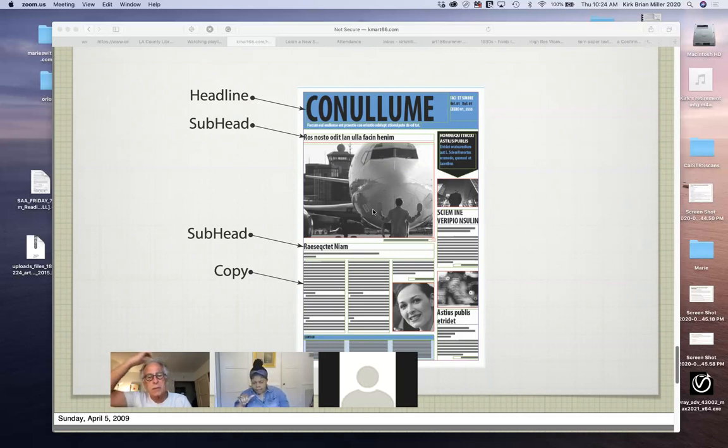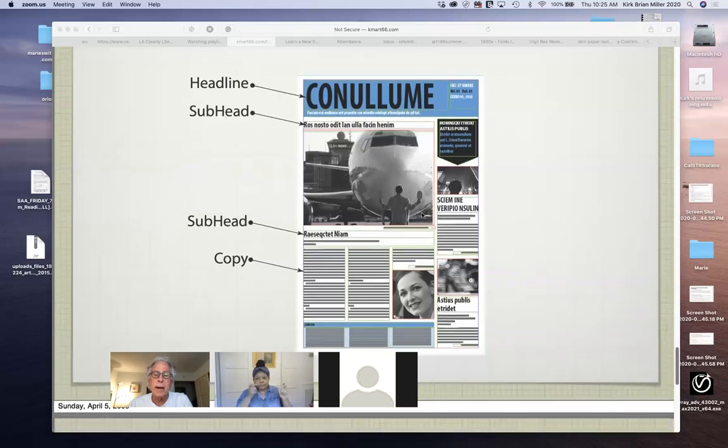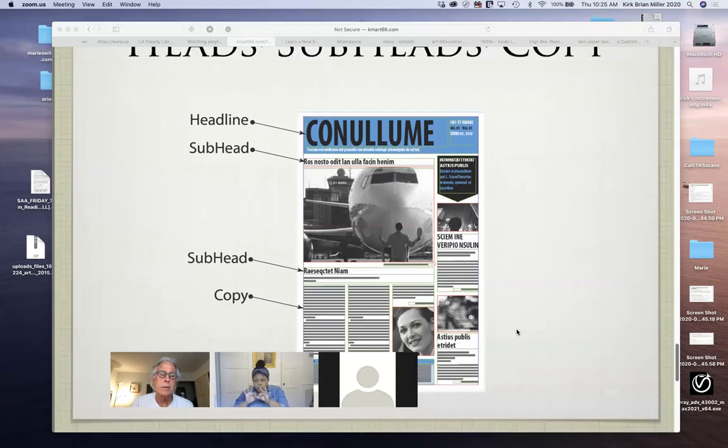But also notice in the design of this as well as that the larger, the more important articles, again, are near the top, the images that they use for the article that support the text are larger and the elements of the ad or in this case the newspaper that are less important are smaller and near the bottom. So again, more terms, headlines, subhead and copy.